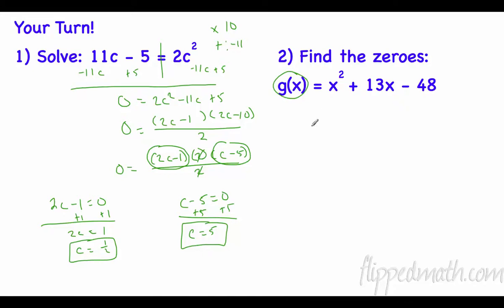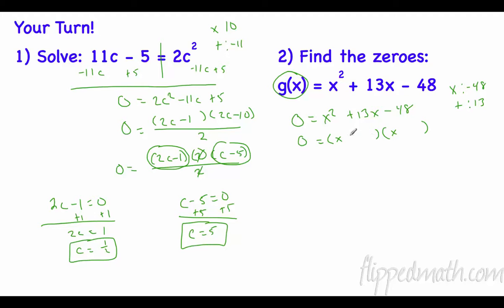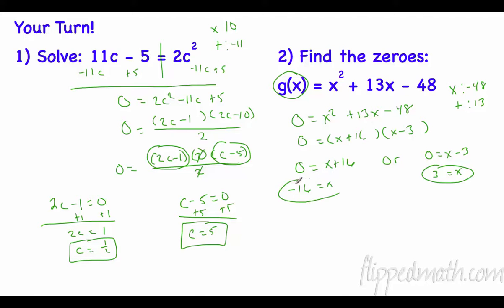Find the zeros: make it 0, so 0 equals x squared plus 13x minus 48. Leading coefficient is 1, so I have a little less work. Two numbers that multiply to negative 48 and add to 13: 16 times negative 3 is negative 48, and 16 plus negative 3 is 13 — that works. Set them equal to 0. Add 3 to both sides: x could equal 3. Subtract 16: x could equal negative 16.